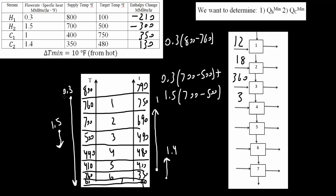Continuing the hot column: interval 5 is 0.3 times (490 minus 410), giving 24. Interval 6 is 0.3 times (410 minus 360), giving 15. Interval 7 is 0.3 times (360 minus 100), giving 78.